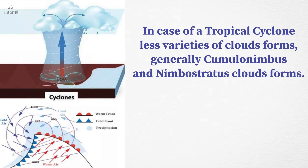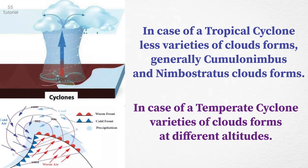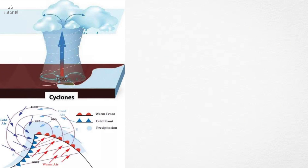In case of a tropical cyclone, fewer varieties of clouds form — generally cumulonimbus and nimbostratus clouds. Whereas in case of temperate cyclones, varieties of clouds form at different altitudes.